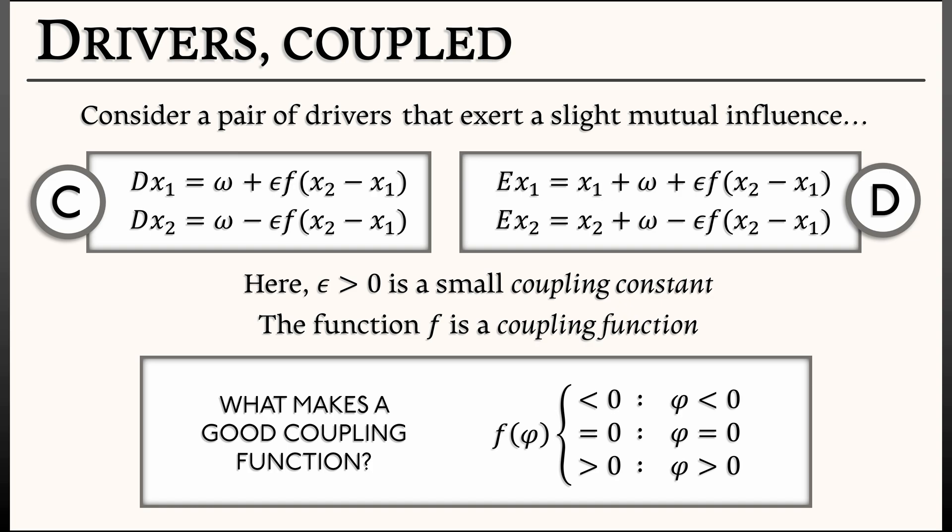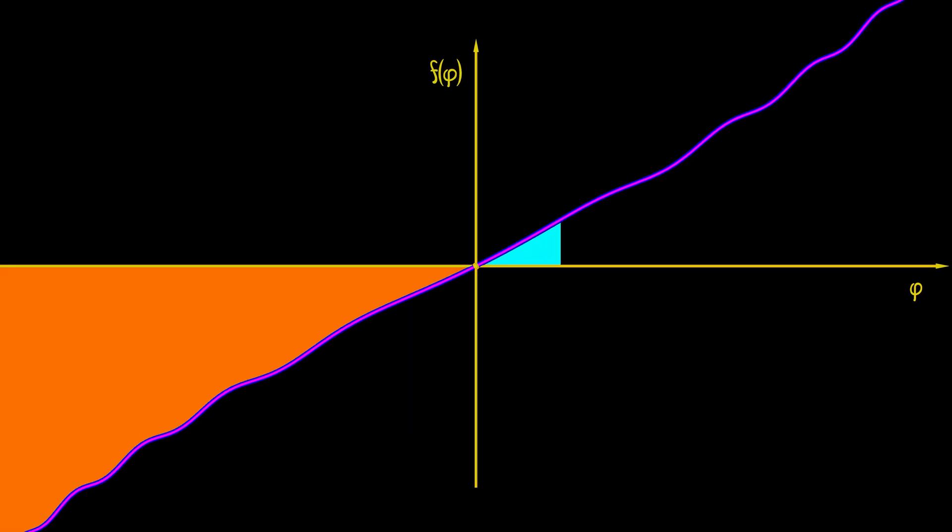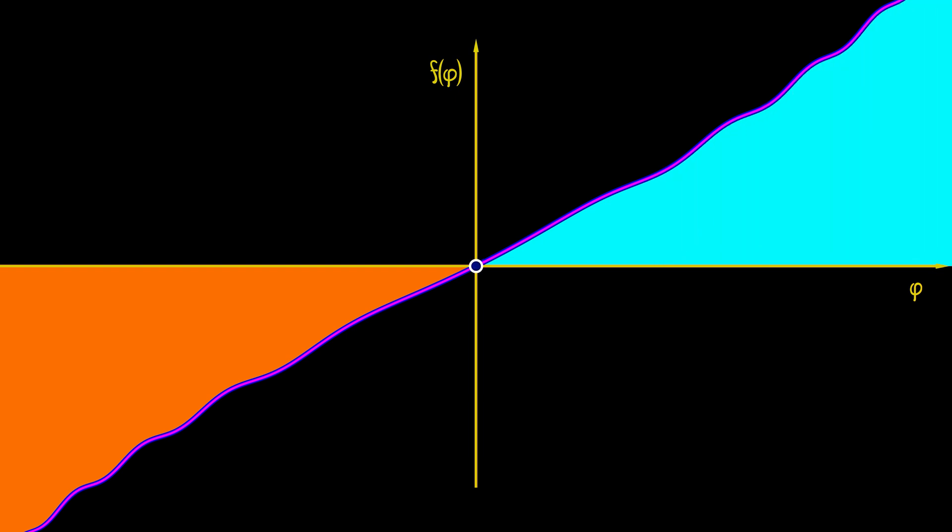On the other hand, if phi is positive, then we want f of phi to be positive, so that if x2 is ahead of x1, x2 slows down a little tiny bit, x1 speeds up a little tiny bit. Now, again, we're not saying exactly what these coupling terms are. We're just giving qualitative behavior, but we are saying that they're very small.